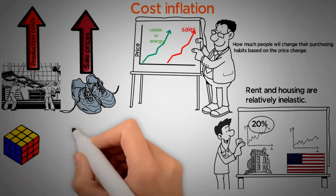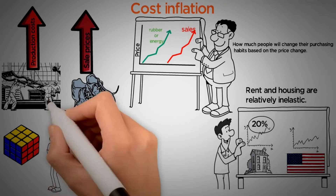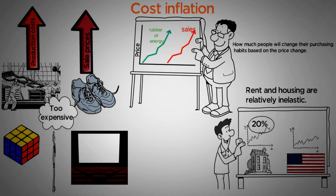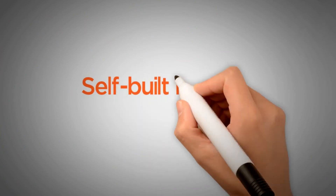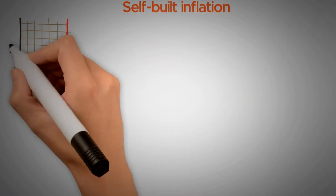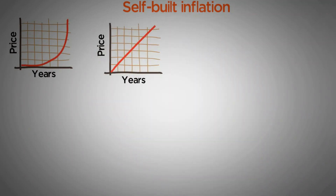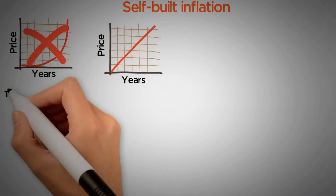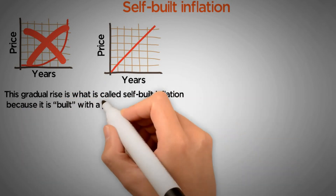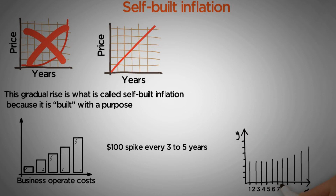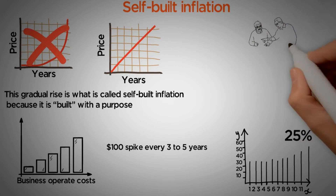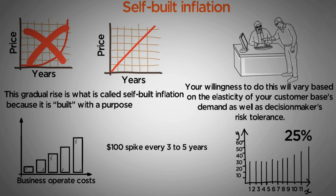However, things like escape rooms, movie theaters, and a lot of entertainment options are relatively elastic. If the escape rooms are too expensive, you can just go to the movies with your friends instead. If the theater is too expensive, then you can just watch this YouTube video. Third, self-built inflation. There are occasions when, to avoid an approaching price bump, there is a gradual increase in prices to avoid the damage that such a sudden rise could cause. This gradual rise is what is called self-built inflation — preemptively raising prices because you know your cost to operate a business will spike every now and then. It might spike every three to five years by a hundred dollars a month, so you'll try to increase the price you charge each month by $25 annually, allowing you to keep ahead of those bumps in your industry that you know are inevitable. Your willingness to do this will vary based on the elasticity of your customer base's demand as well as decision-makers' risk tolerance.